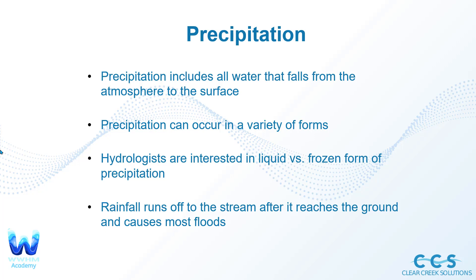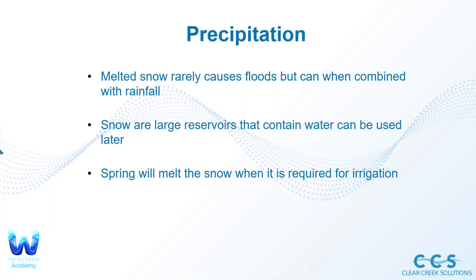Rainfall runs off to the stream after it reaches the ground and often causes most floods — not necessarily the frozen form, but the rainfall form. Melted snow rarely causes floods on its own, but can when combined with rainfall. It's mostly those large rainfall events that cause floods, though melted snow combined with additional runoff can contribute as well.